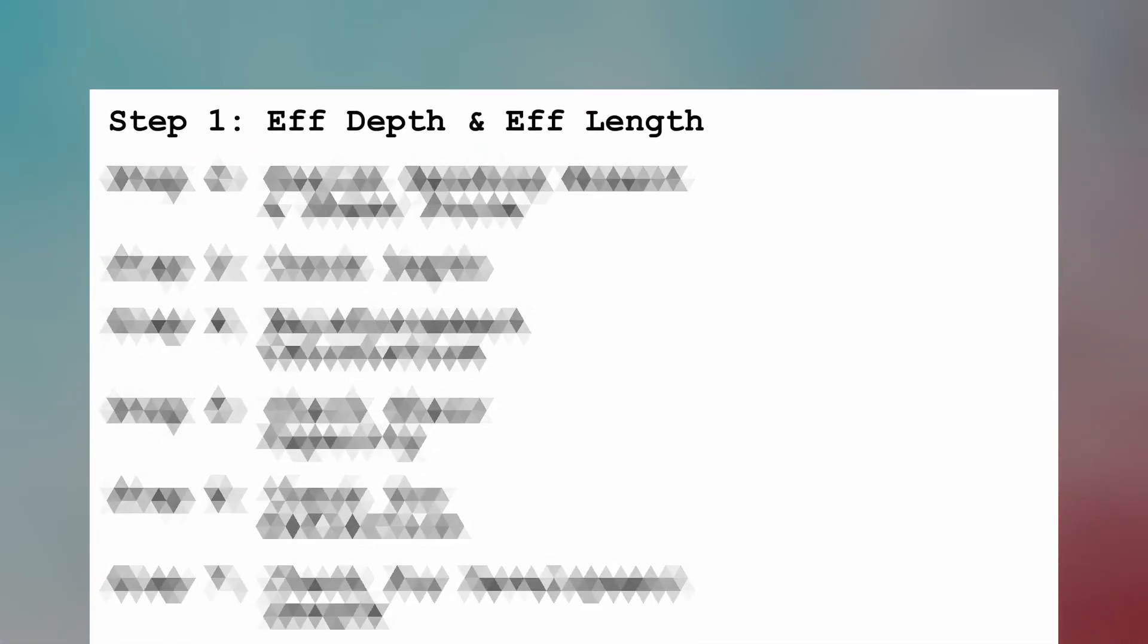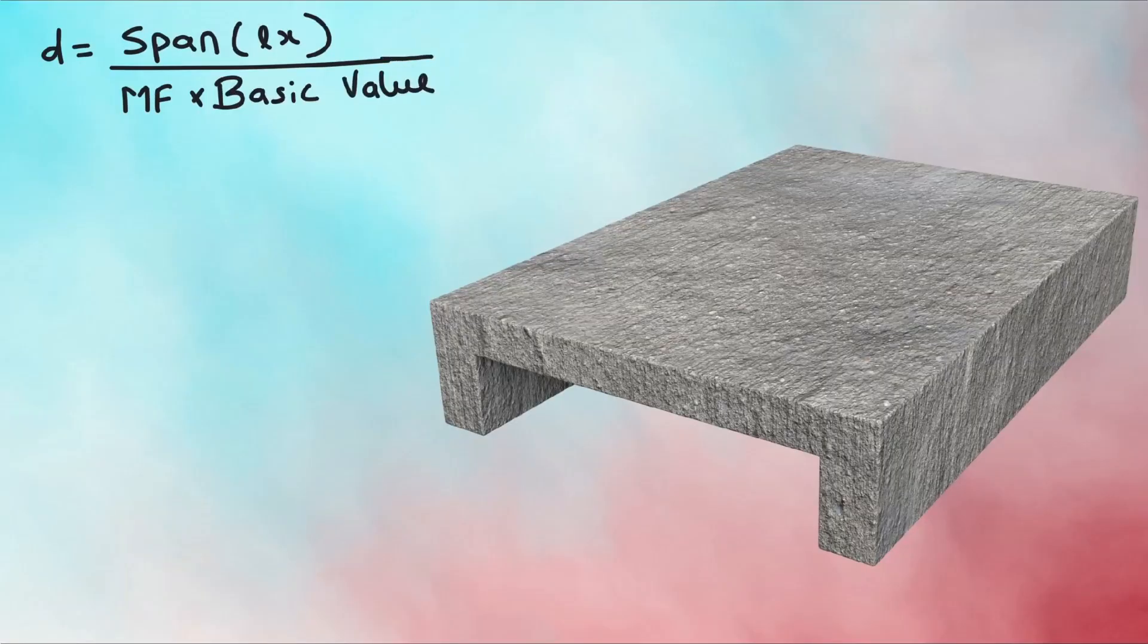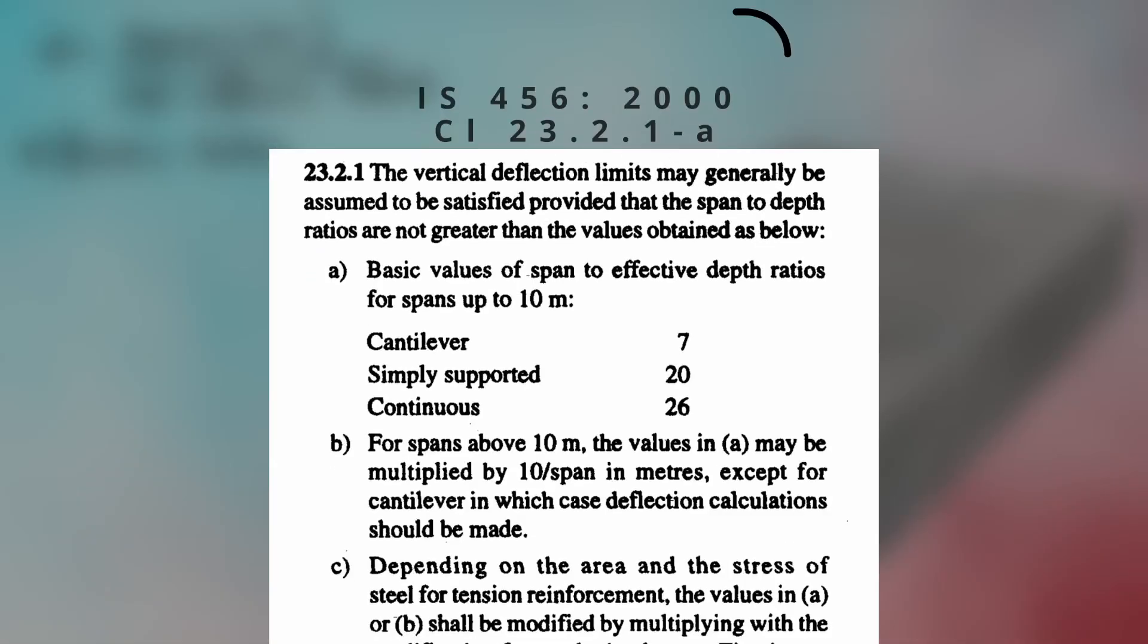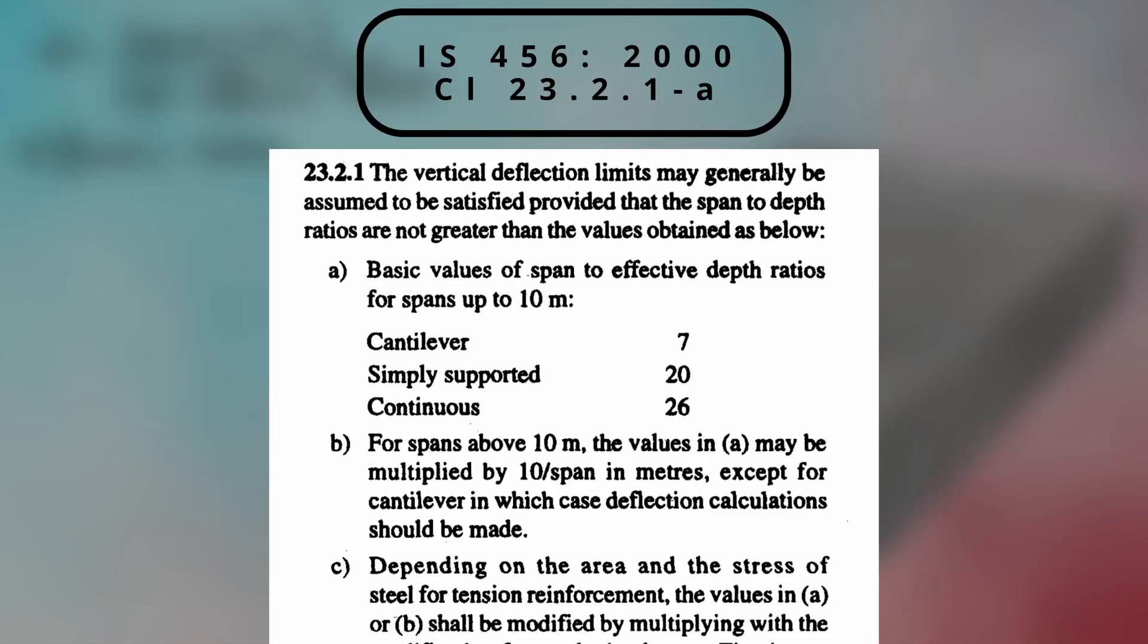Step 1 is to find the effective depth and effective length of the slab. Effective depth can be found using this formula: span divided by basic value times modification factor. Span is the shorter length LX. Basic value is taken as per clause 23.2.1a, which says for different types of slabs, basic value generally ensures the slab is within deflection limits. Assuming our slab is simply supported, we can take the basic value as 20.